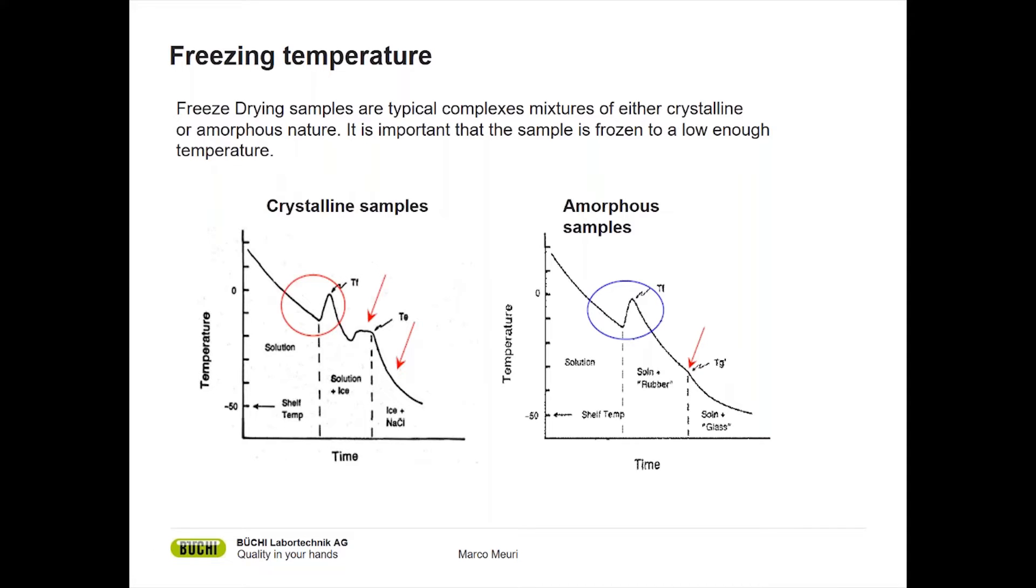Often household freezers are used for freezing samples. They only go to about minus 18 to minus 24 degrees, and this is usually not enough to really freeze your samples. So one hint from me: if you use a freezer, please use at least a minus 40 degrees freezer to freeze your freeze drying sample.